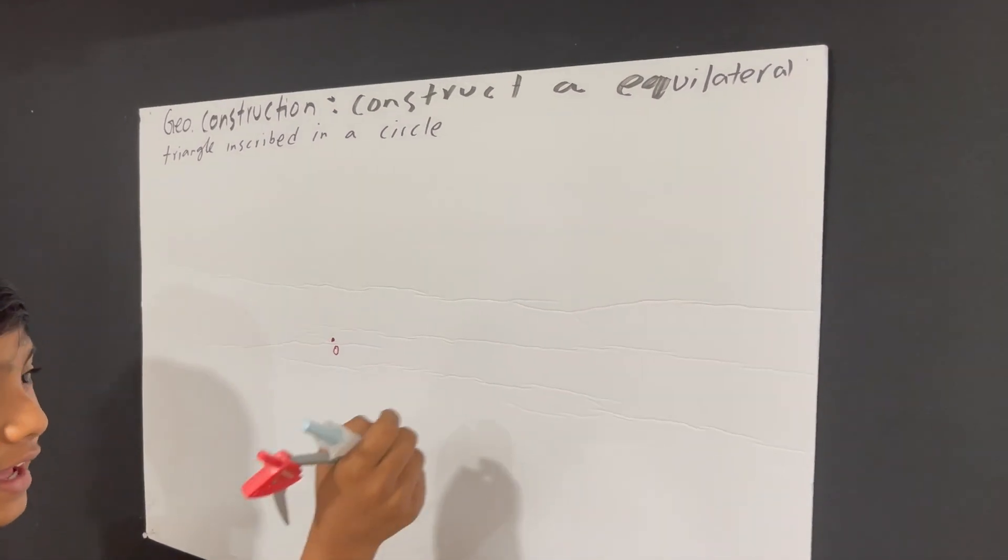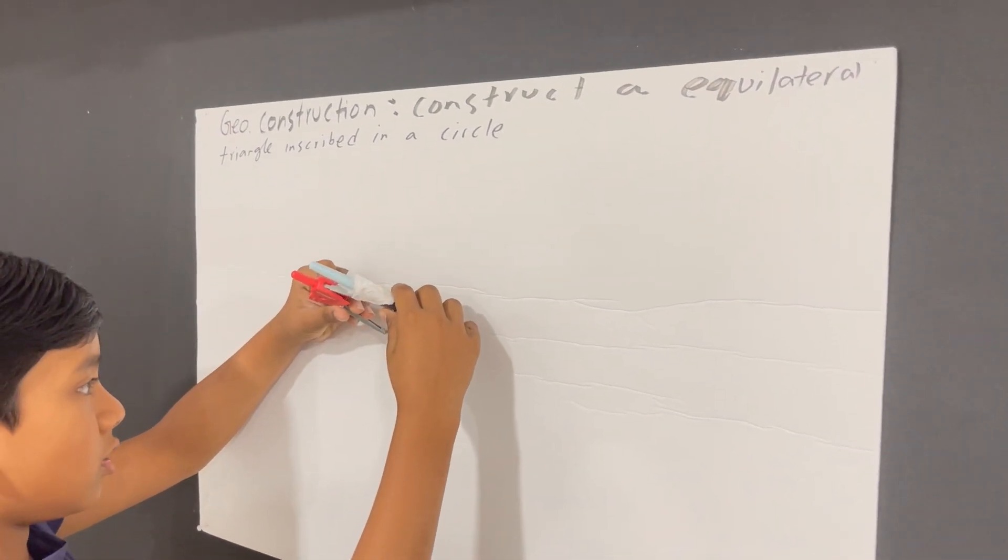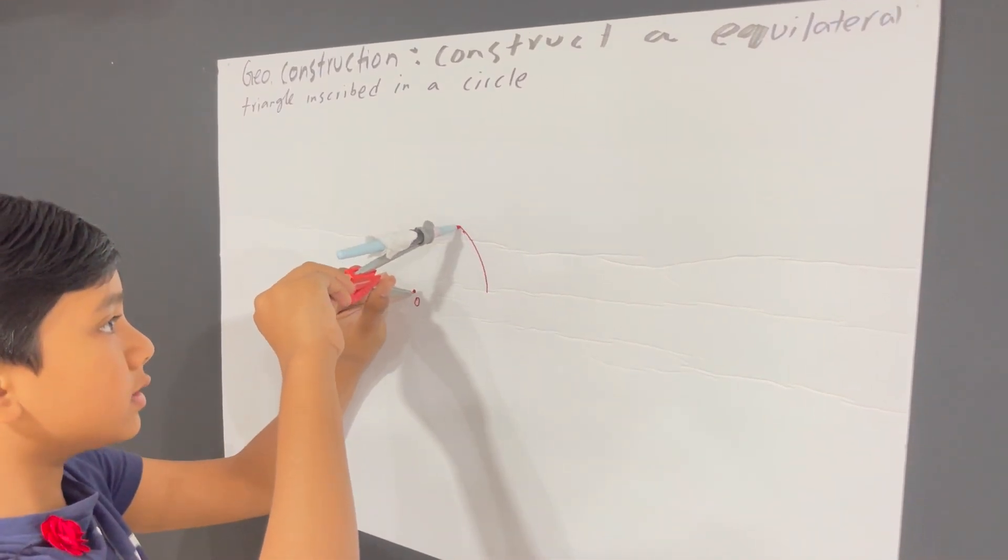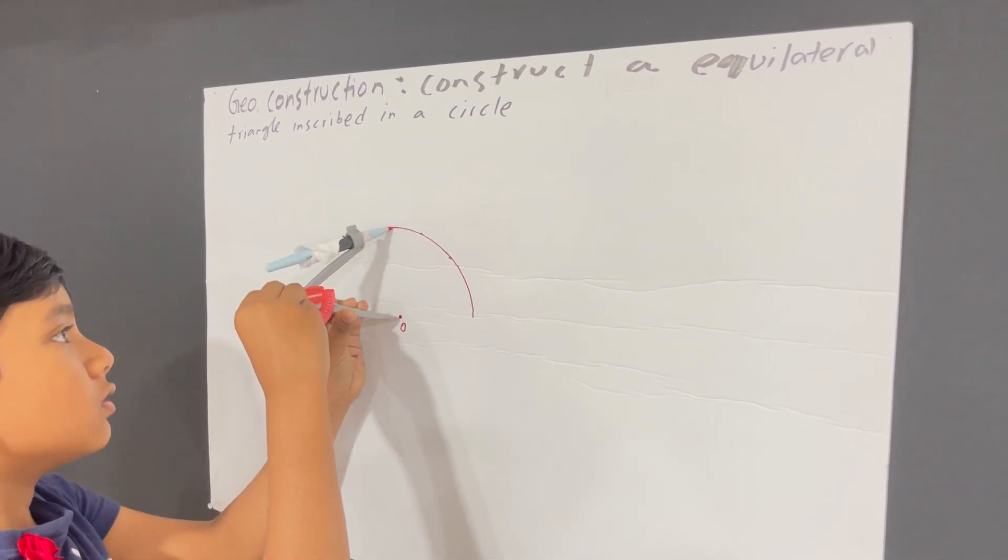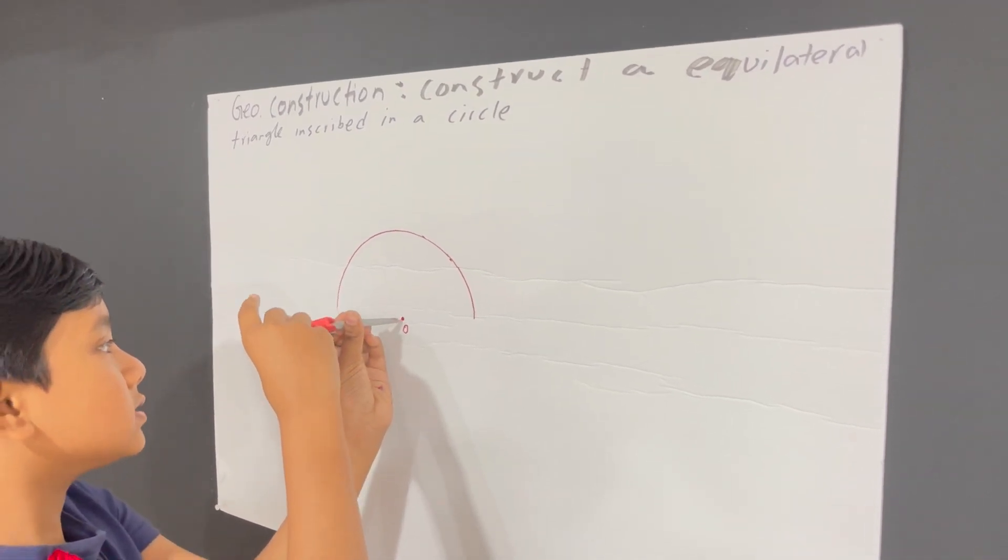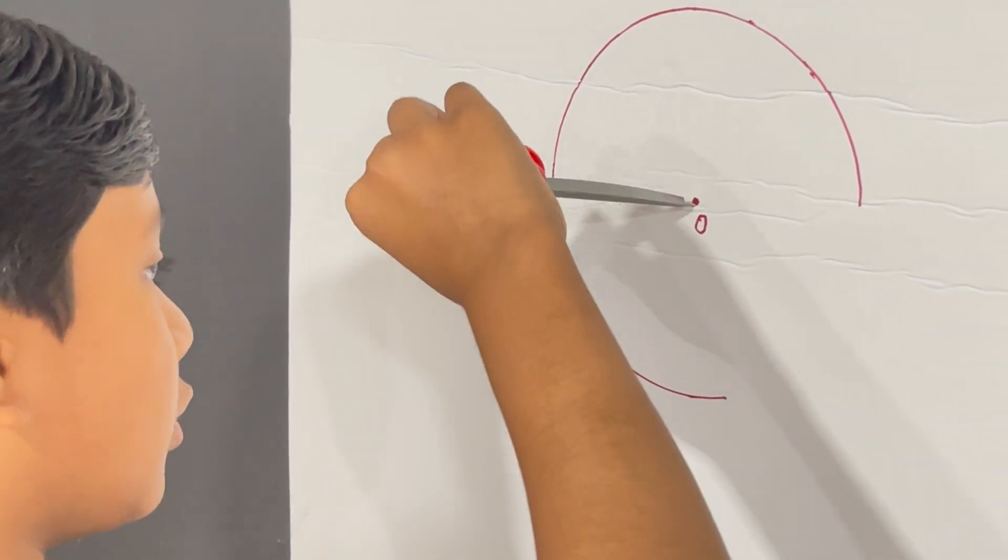So now this is going to be the center of our circle. So now I'm just going to construct the circle, which is pretty easy because all you need is a compass and knowledge of how to use a compass, of course.